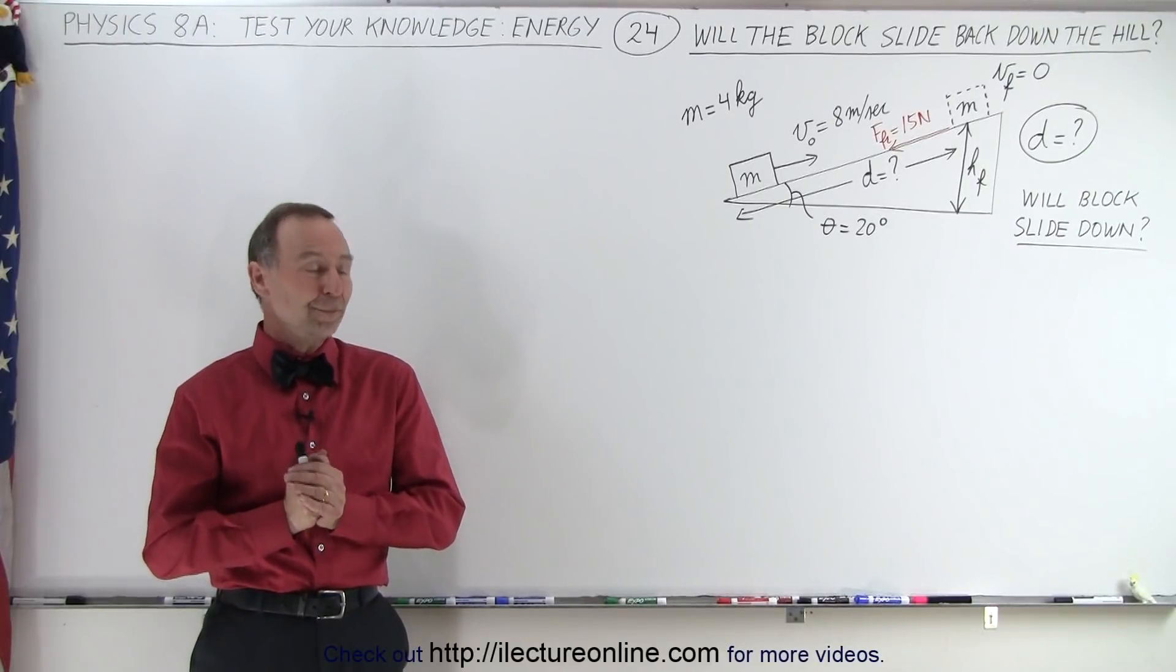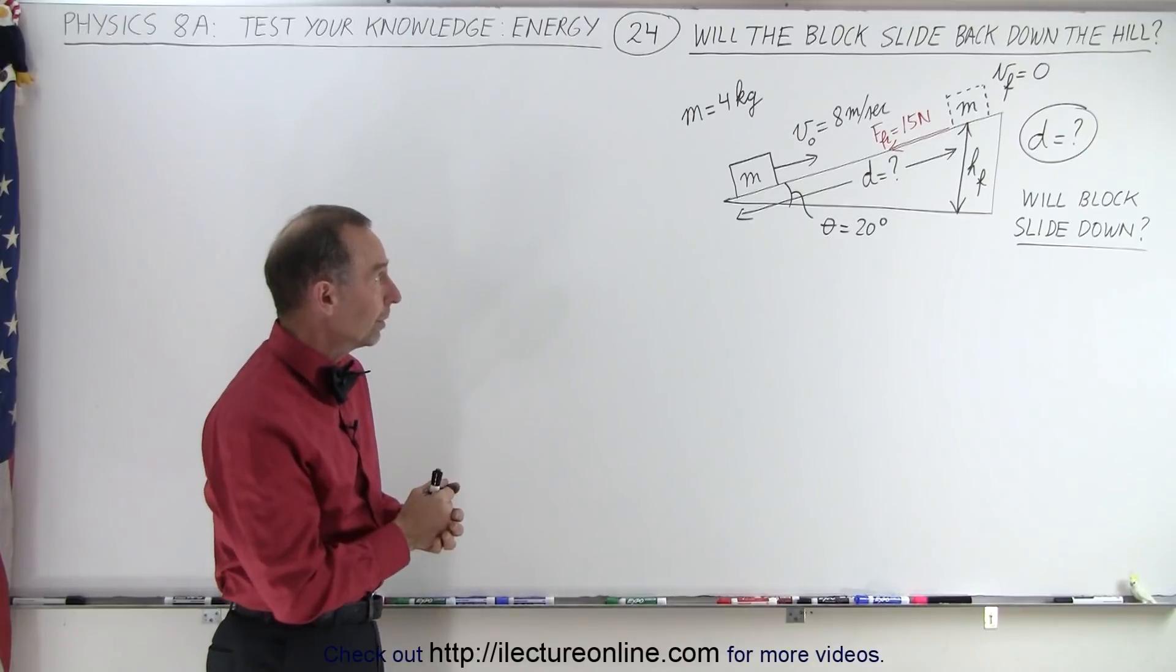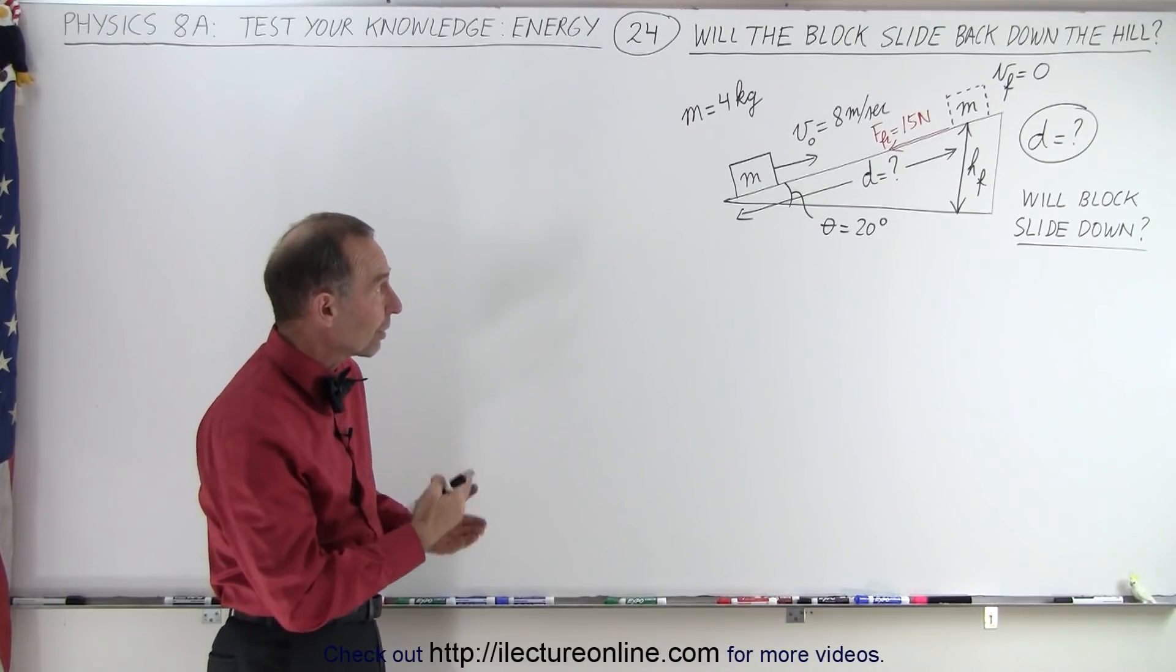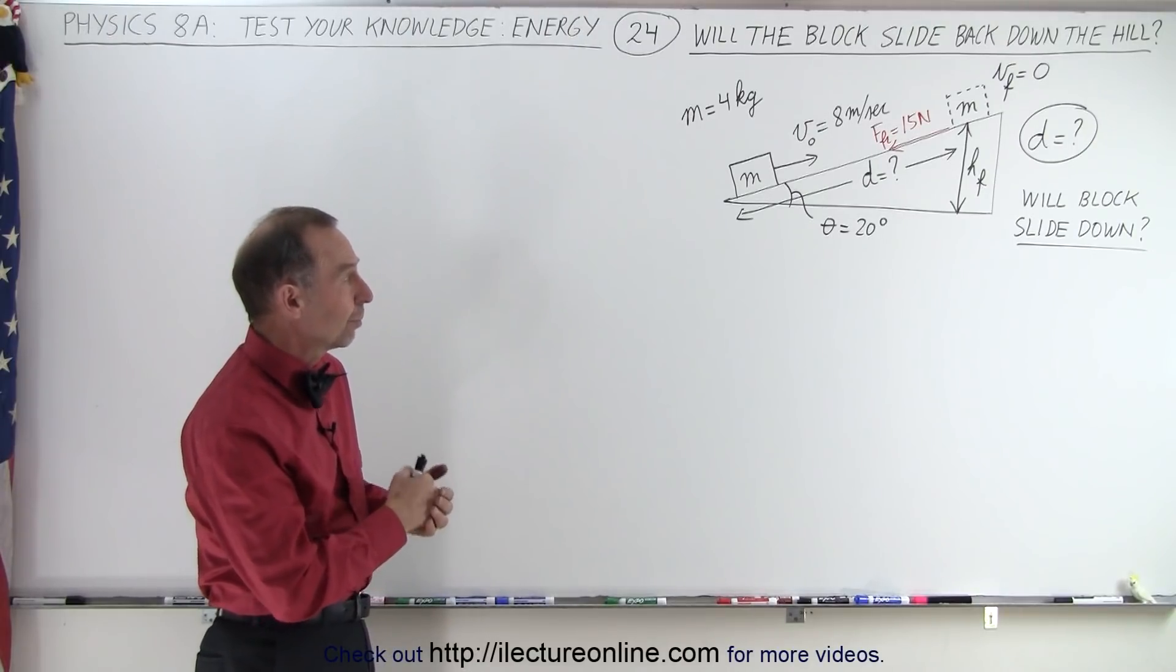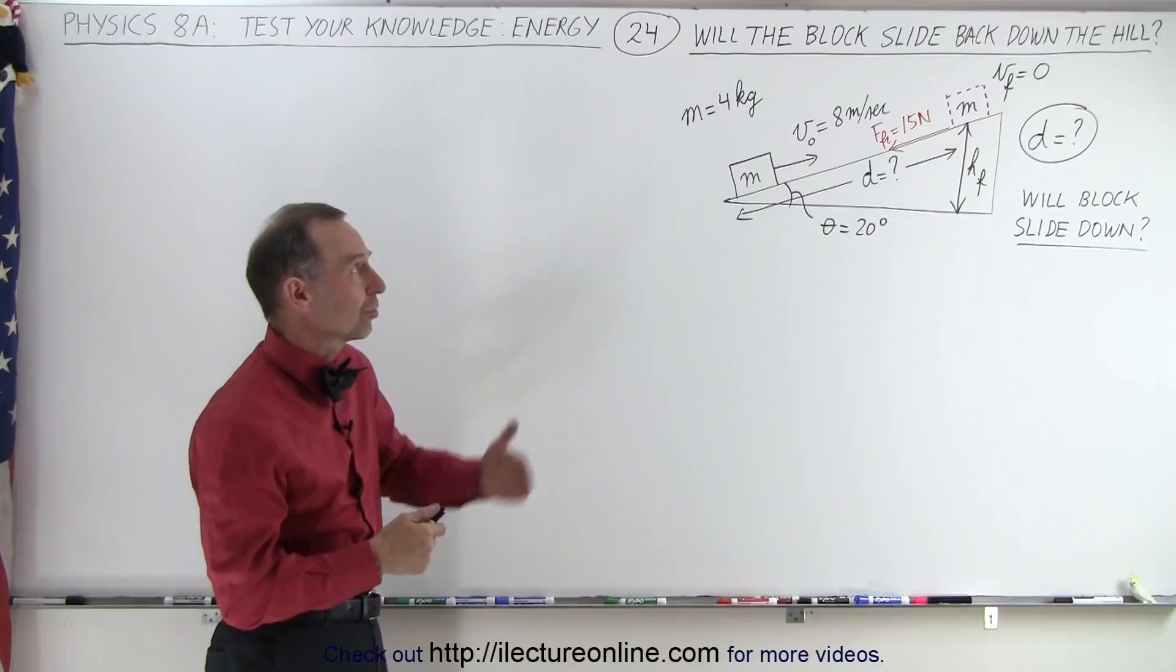Welcome to our lecture online. Our next problem deals with a block that is pushed up a hill. It's given an initial velocity of 8 meters per second, but since there's friction and we're gaining height, eventually the block will come to a stop.